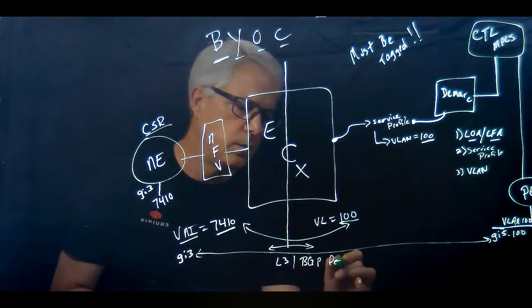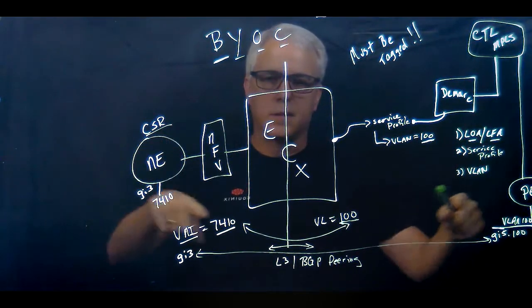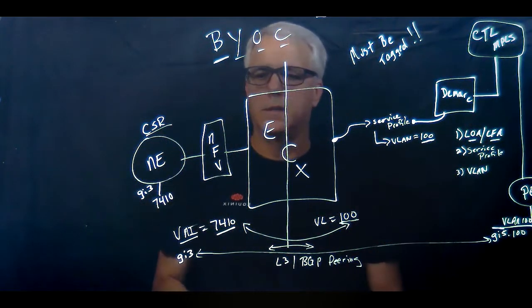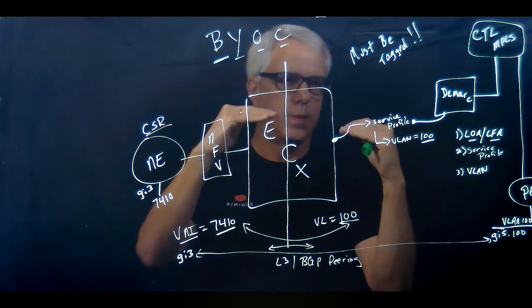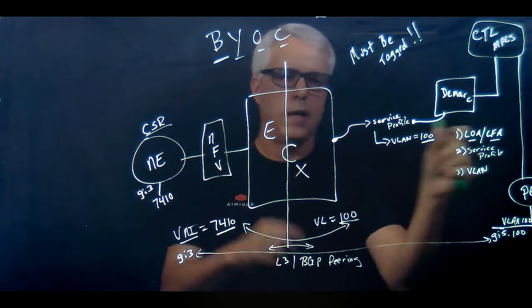This is bring your own connection—this is how everything gets instantiated. Basically three steps: customer orders the circuit, they get the LOA, they upload the LOA into the workflow.